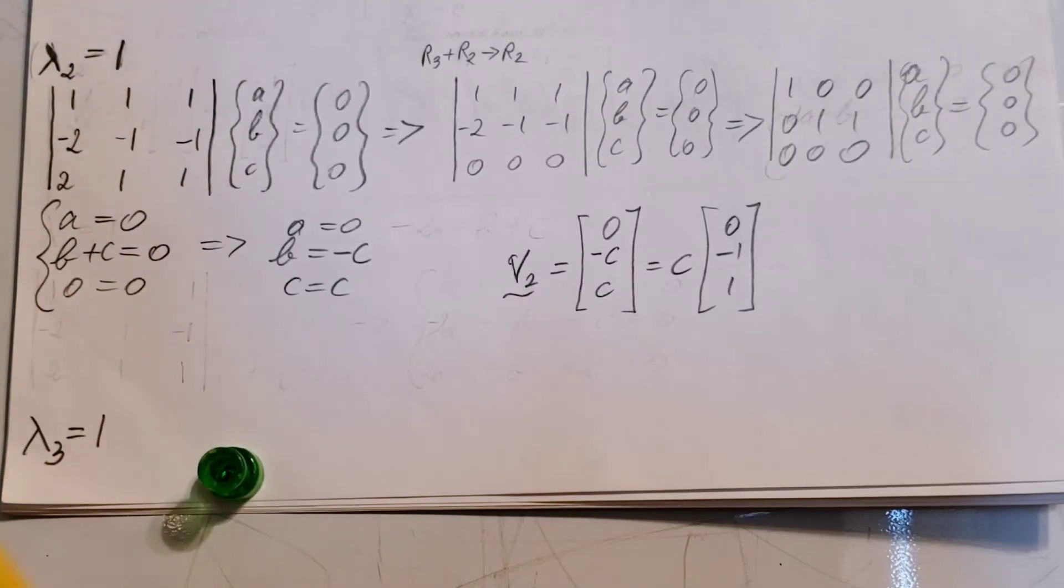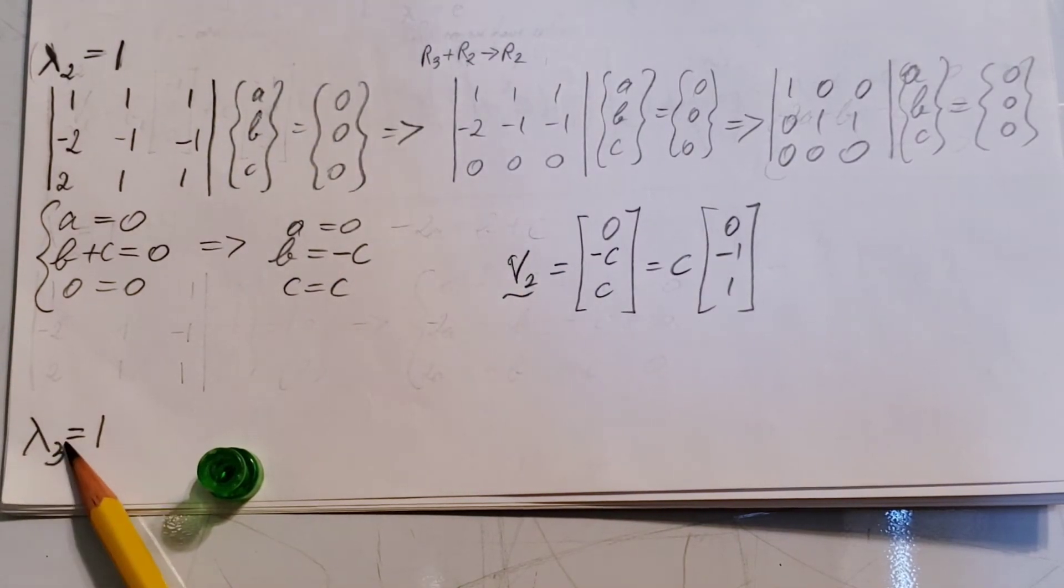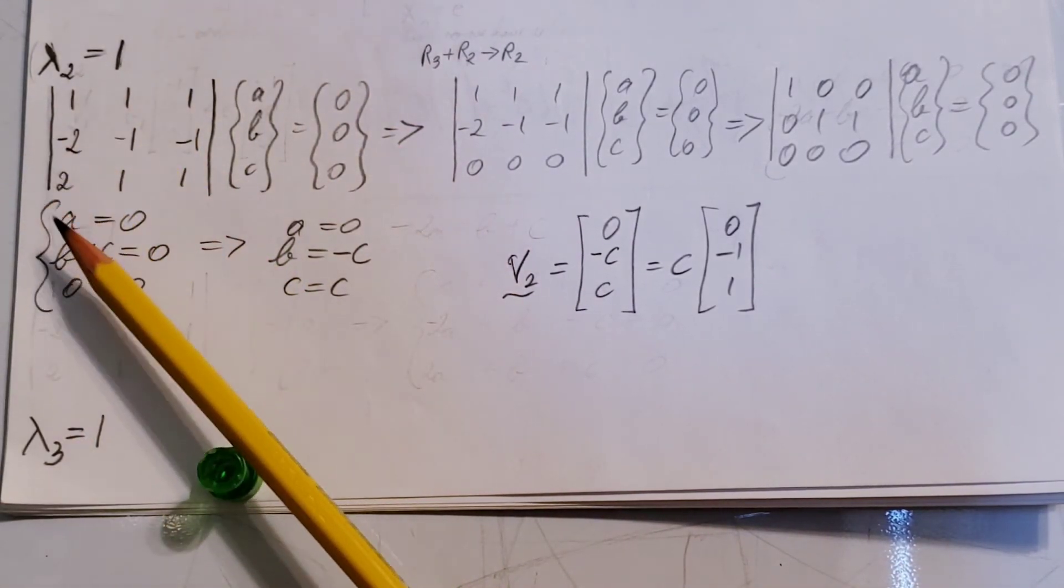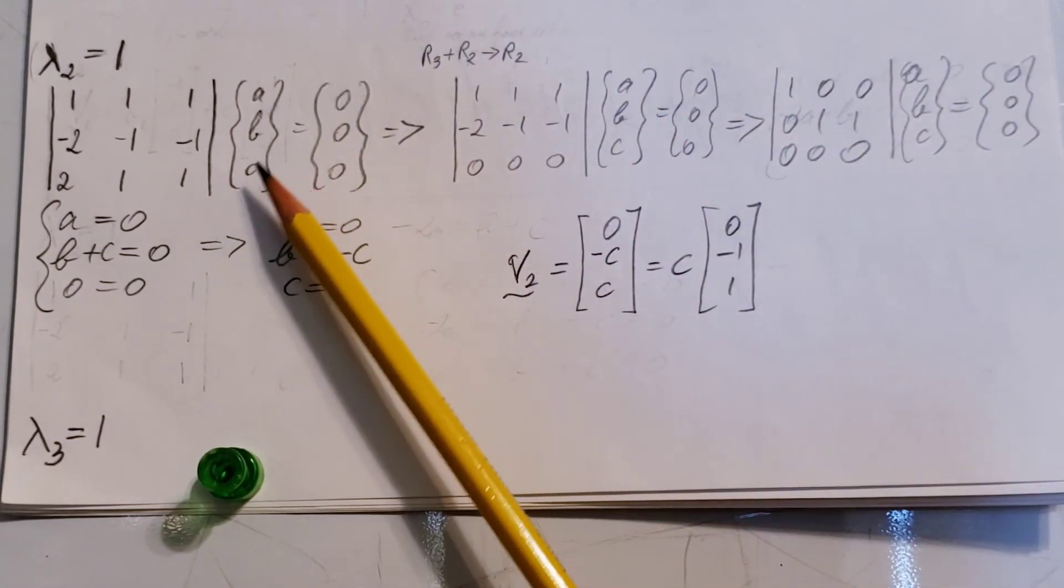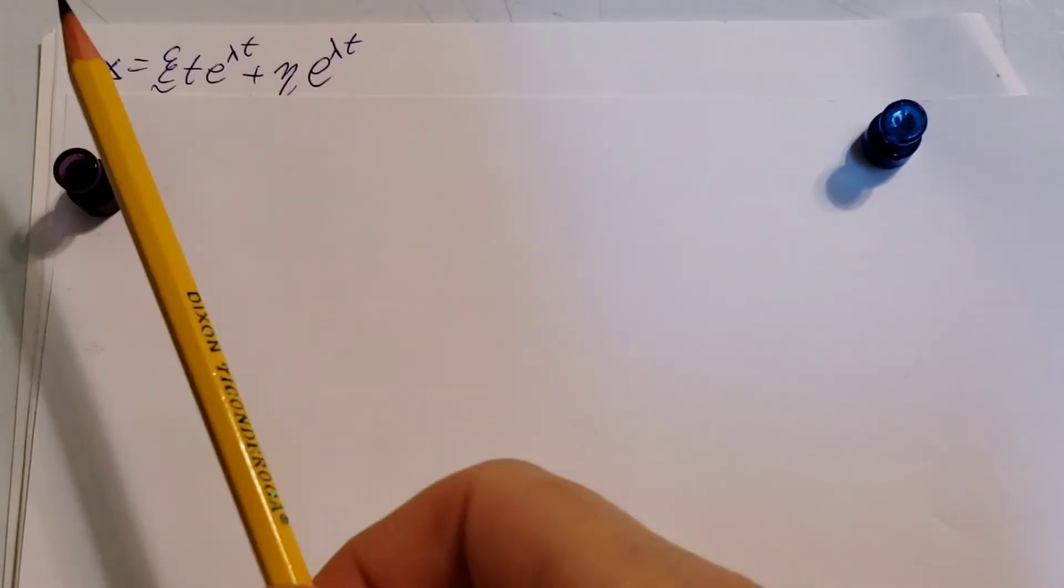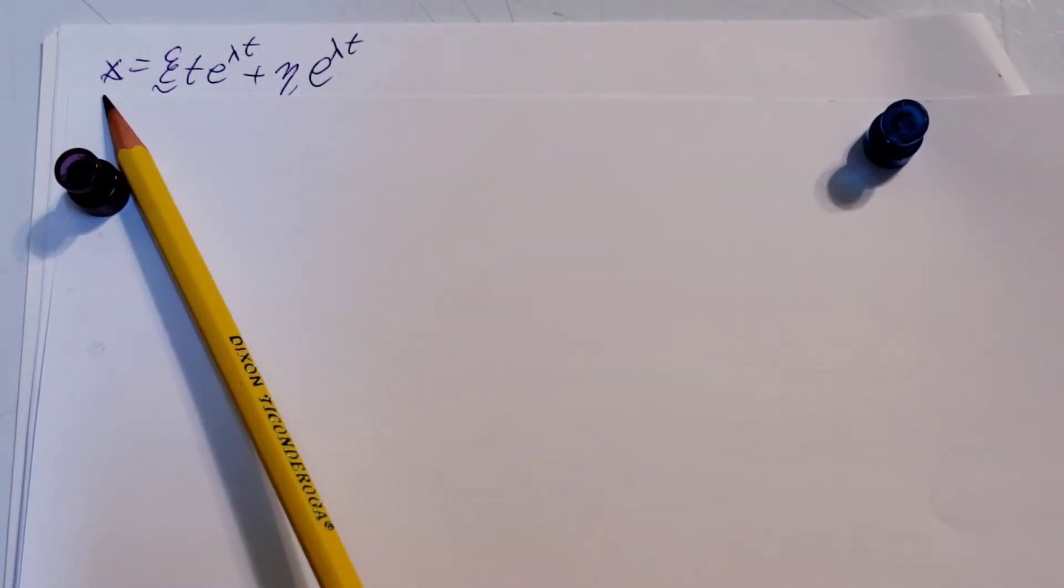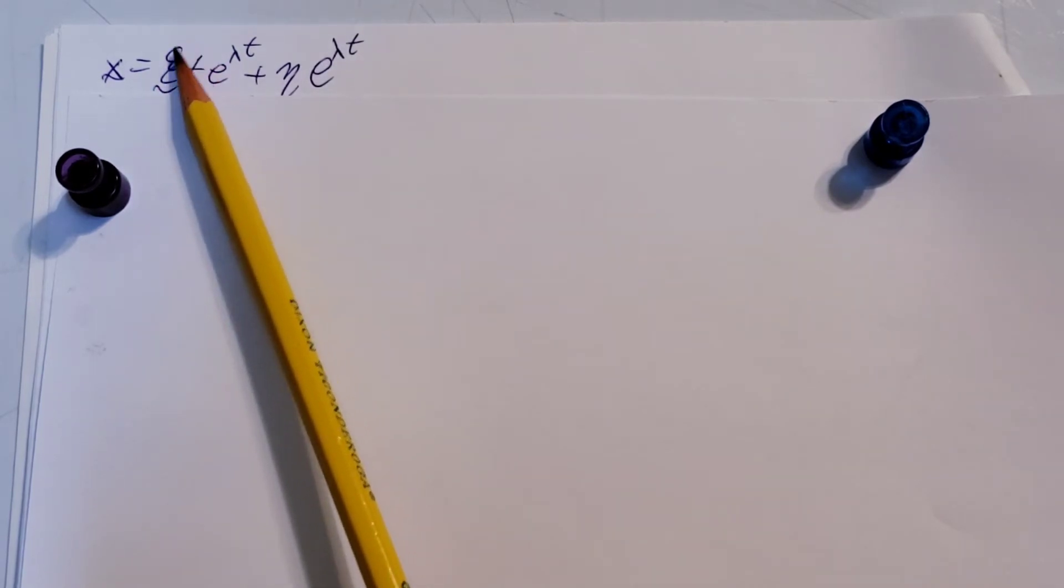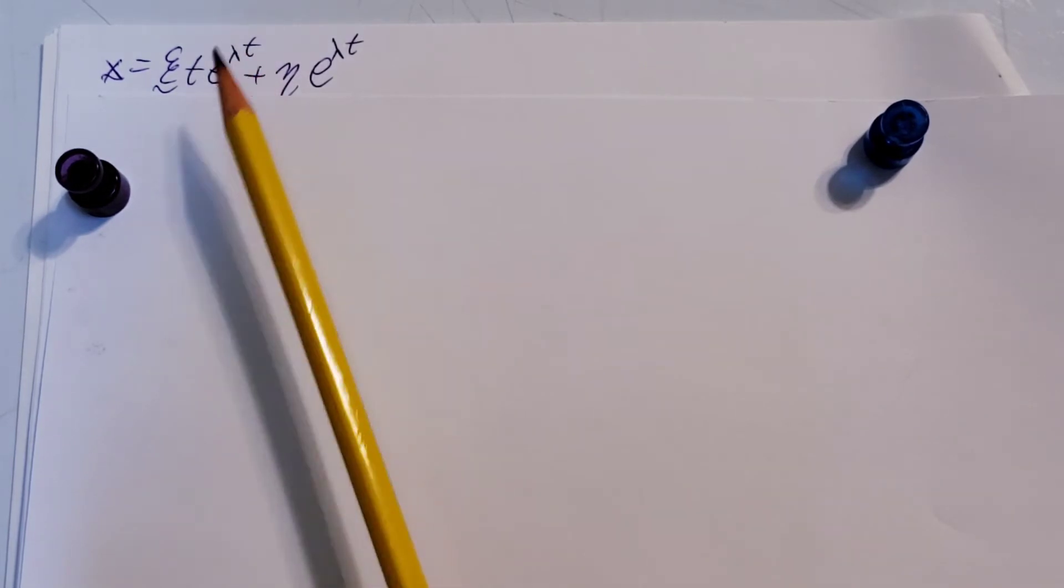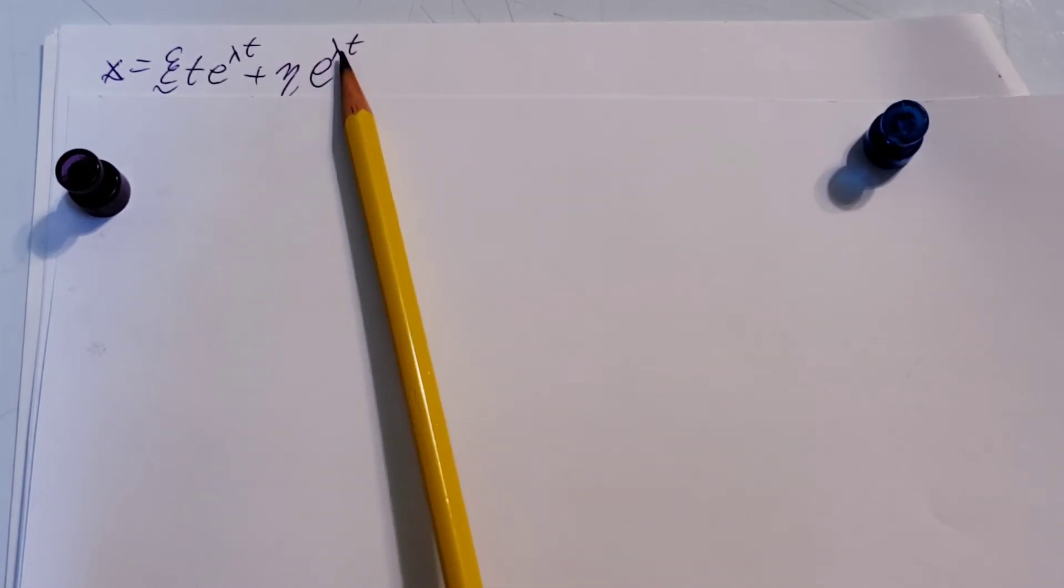Now, to continue, we need to find our third eigenvector for our third eigenvalue. But, since this repeats what this one was, we will not be able to just simply follow this step, because we're just gonna get this vector again, and that's not what we want. This is the formula that we're gonna be using to determine our third eigenvector. The x vector equals, this is the Greek letter xi, so the xi vector, times te to the lambda t plus eta, Greek letter eta, another vector, e to the lambda t.